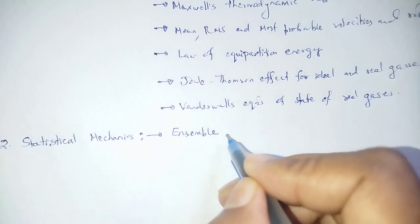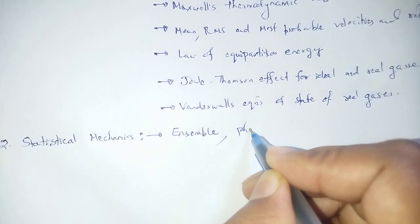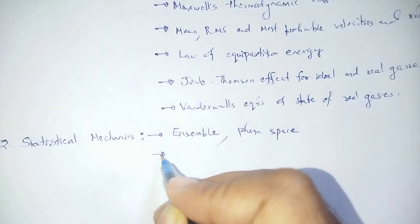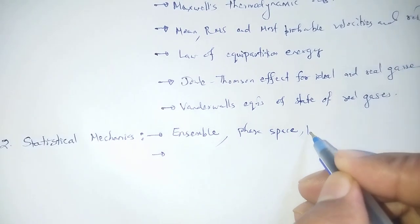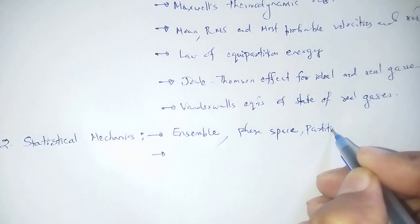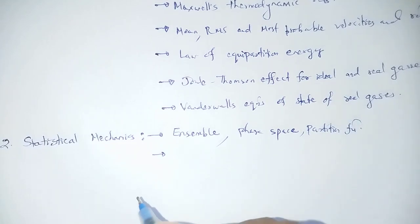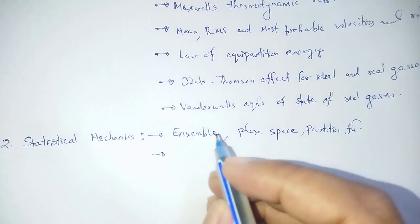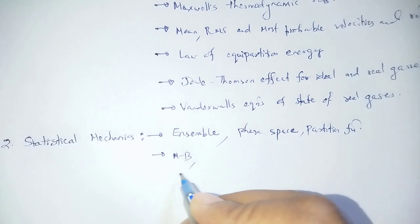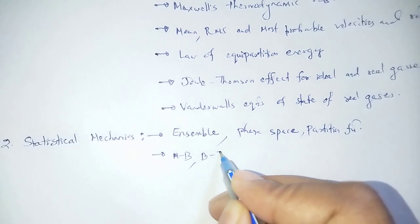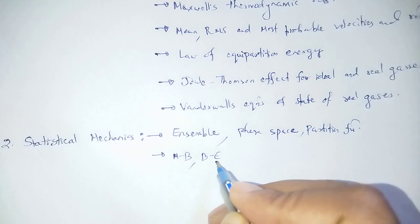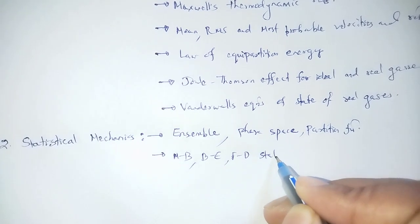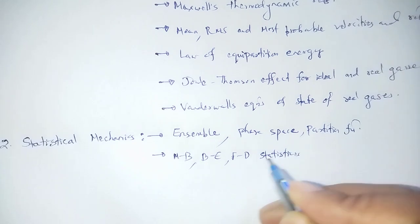We are going to discuss the partition function, and three types of statistics: Maxwell-Boltzmann statistics, Bose-Einstein statistics with Bose-Einstein condensation, and Fermi-Dirac statistics.